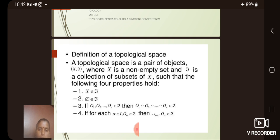Third, if O1, O2, etc., On belongs to tau, then O1 intersection O2 intersection ... intersection On belongs to tau. Fourth, if for each a belongs to I, Oa belongs to tau, then union of Oa belongs to tau.